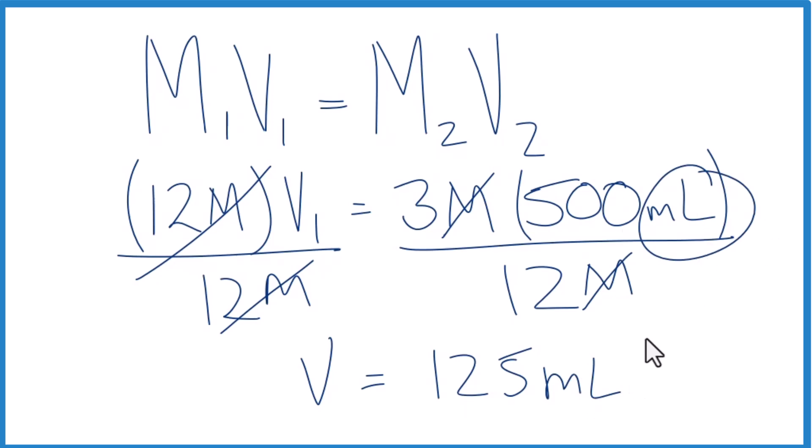You could also use a stock solution. So if you had a six molar solution of hydrochloric acid, you could use this equation. Again, instead of 12 molar, you'd put six molar in, and you could figure out how much you need to make your three molar hydrochloric acid solution.